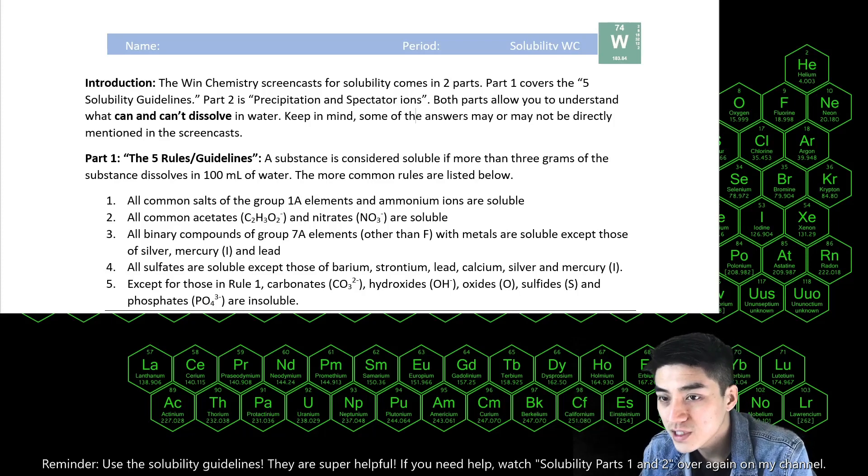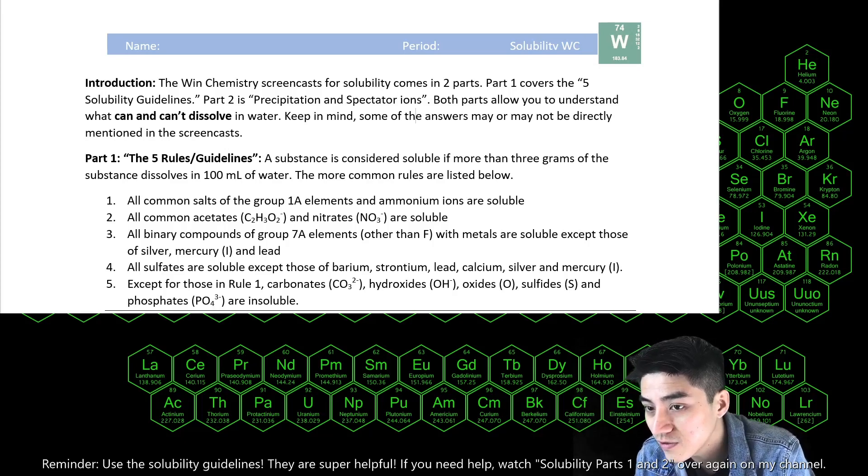I can't emphasize enough how useful these five guidelines are because it tells you in plain English what's going to dissolve and what will remain insoluble. So basically it helps you identify what your spectator ions should be—that's your soluble product—and what your precipitate, which is your insoluble product, should be.